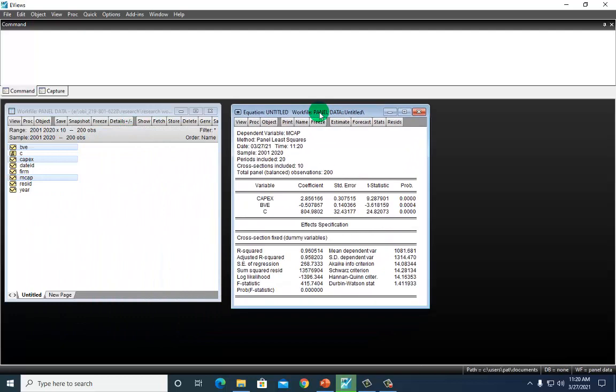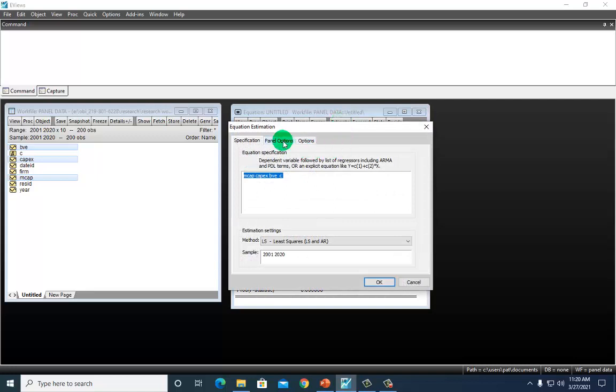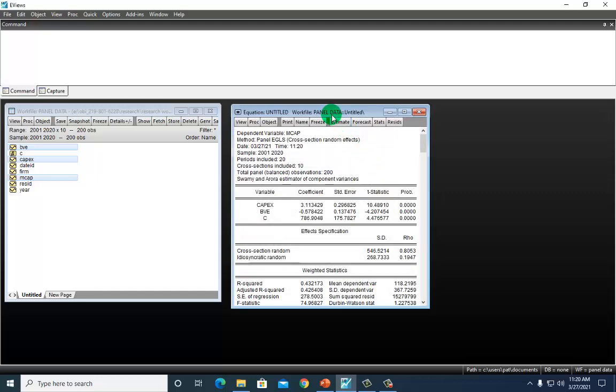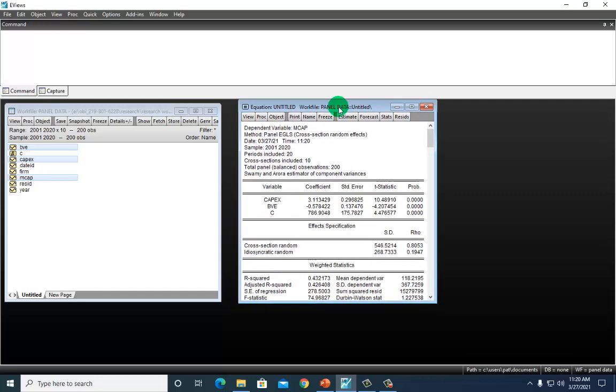Alright, so here's my fixed effects model results. And then I'm going to go to estimate and then go back to panel options, and for cross-section change it to random and click OK. And here's what I got here for random effects results.